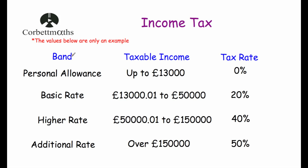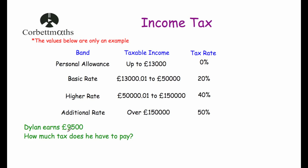So let's have a look at our first question. Dylan earns £9,500 — how much tax does he have to pay? If we look at our bands, the personal allowance is up to £13,000 so the tax rate on the first £13,000 is 0%, meaning no money is owed. Because Dylan earns less than that, he'll have to pay no income tax at all.